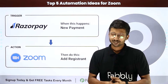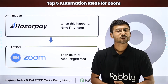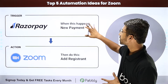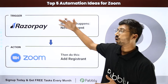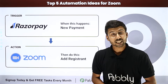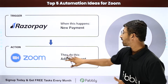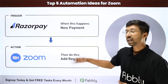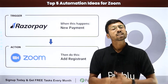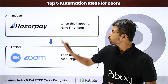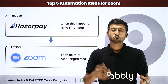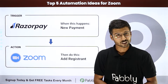You can completely automate this process. Using this automation, whenever a new payment is received on your payment gateway like Razorpay, the customer who made the payment will automatically be added as a registrant in your Zoom meeting or webinar. Instead of Razorpay, you can also use other payment gateways like Stripe, InstaMojo, or PayPal to set up this automation.